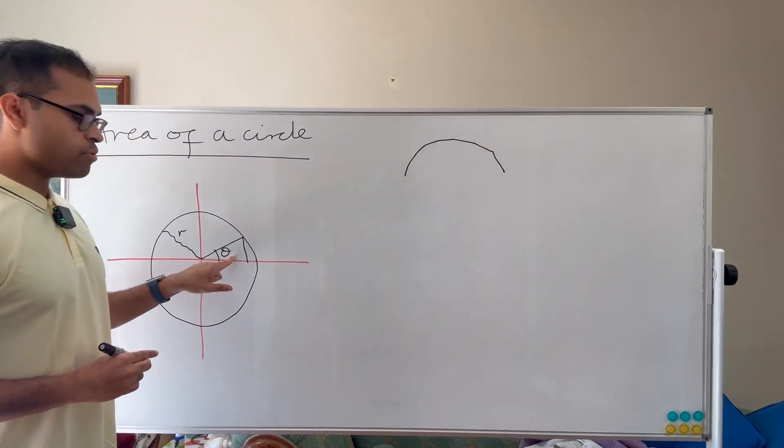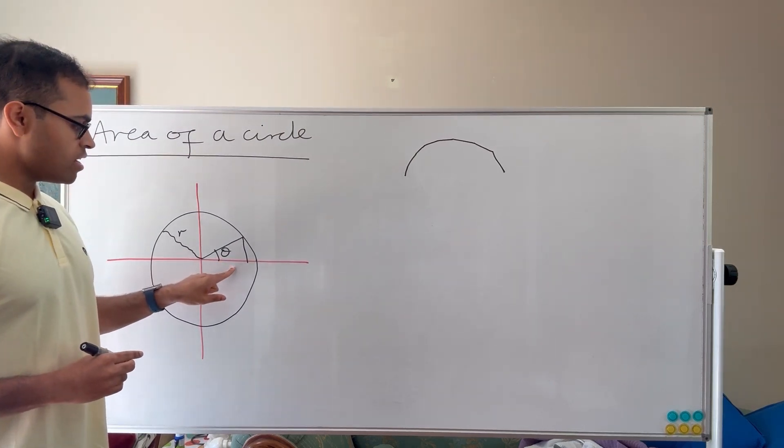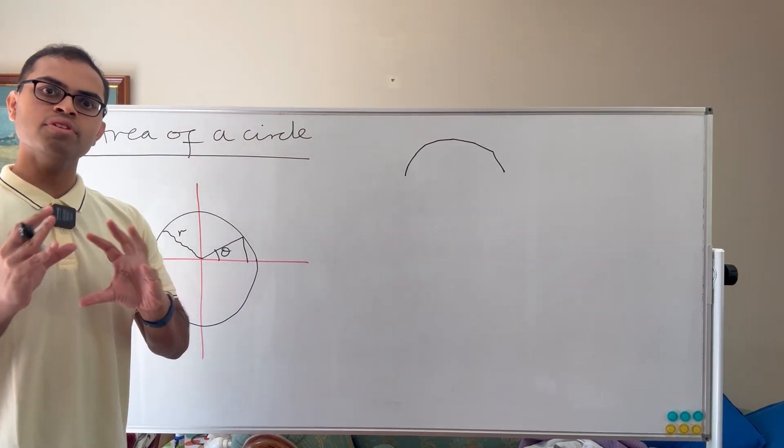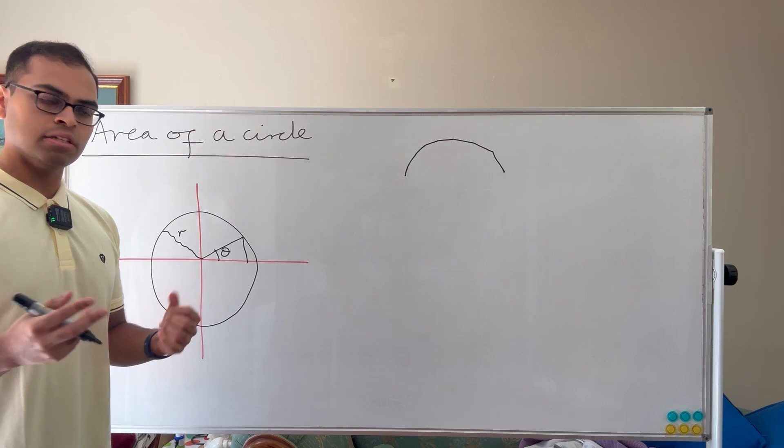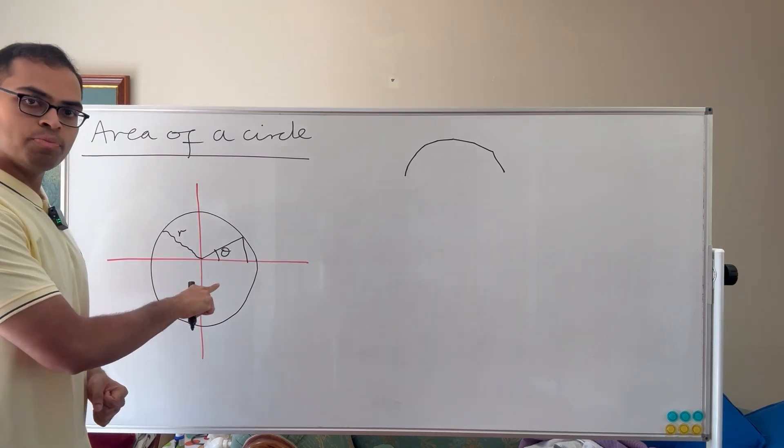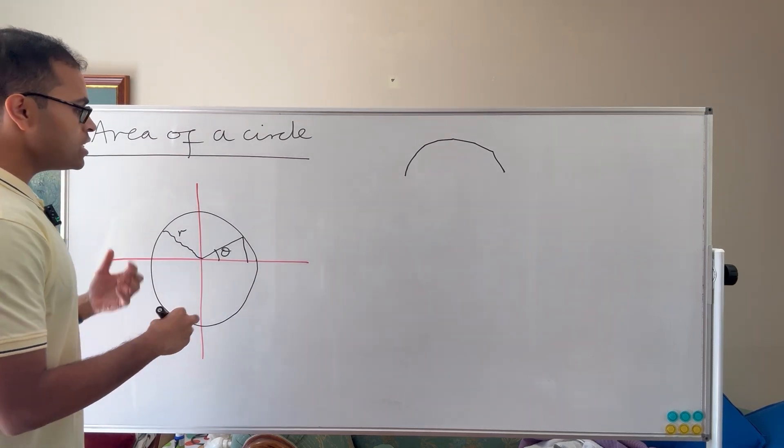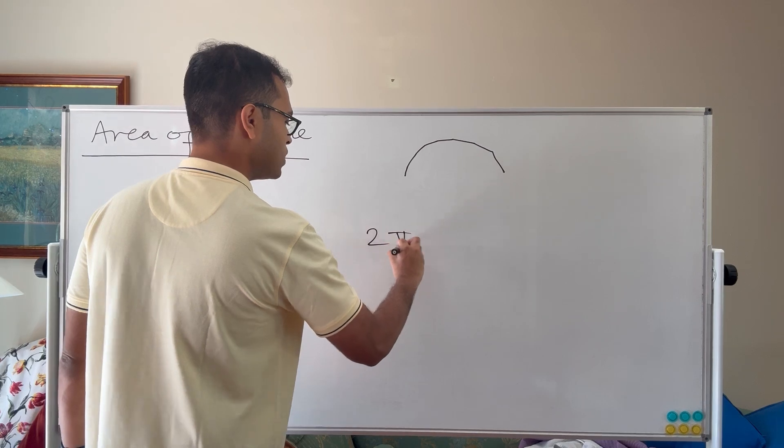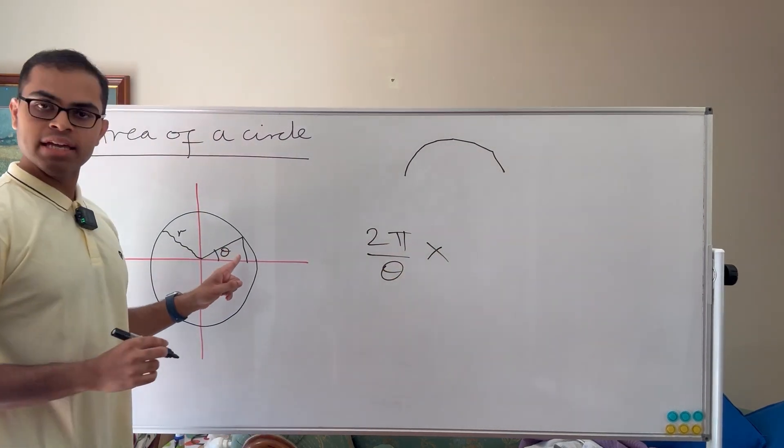So in particular, as θ approaches zero, if we find the area of this triangle, how many of those triangles are going to fit into the circle? Well, the entire circle has 2π radians. And so we're going to get 2π over θ times the area of this triangle.